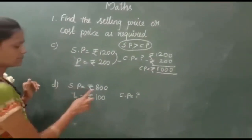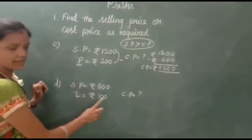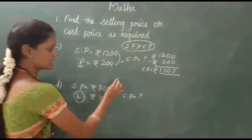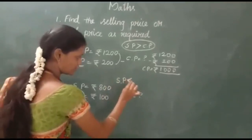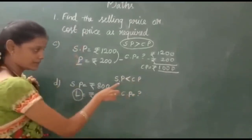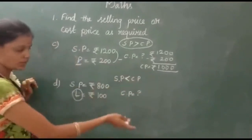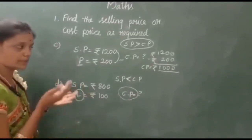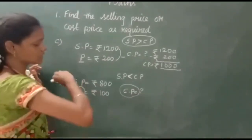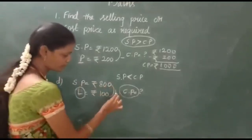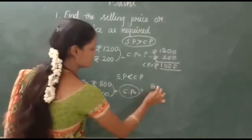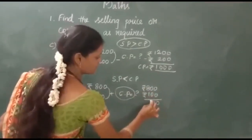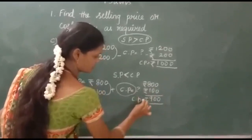Question number D. Selling price is 800, loss is 100. What is the cost price? Loss is given. When there is a loss, the selling price will be lesser and the cost price will be greater. Since we are going to increase the value, what operation do we use? Addition. So 800 plus 100 gives you 900. The cost price is 900.